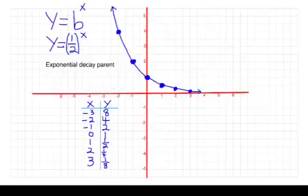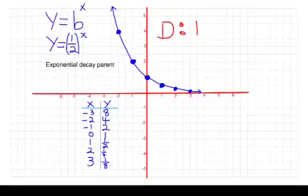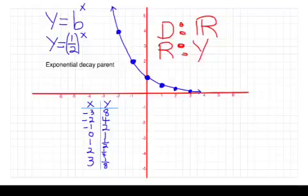The exponential decay is very similar. Again, you have all real numbers for the domain because there's no number you can't plug in again. And the exact same thing for the range. Y never gets to zero, so Y has to be greater than zero. Set notation, interval notation exactly as we saw in the previous screen with exponential growth.